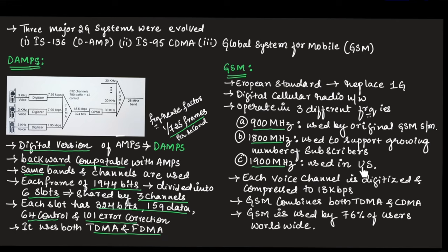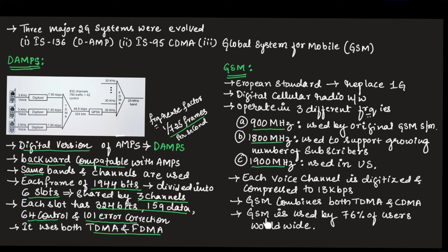The 1900 MHz frequency is used in the United States. In GSM, each voice channel is digitized and compressed to 13 Kbps so that it can be easily transmitted. GSM combines both TDMA and CDMA technology, and it is used by 76% of users worldwide, making it the most widely used mobile technology.